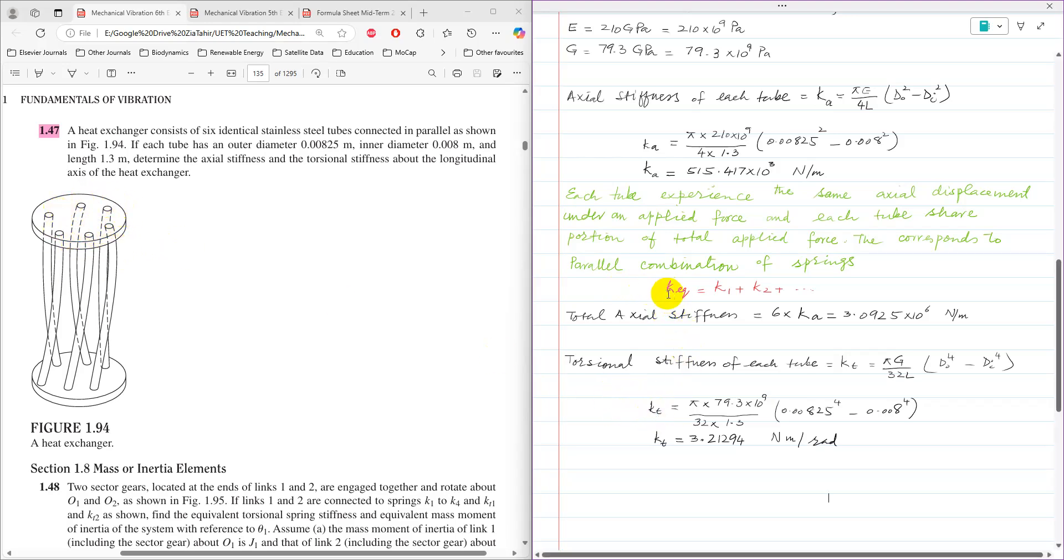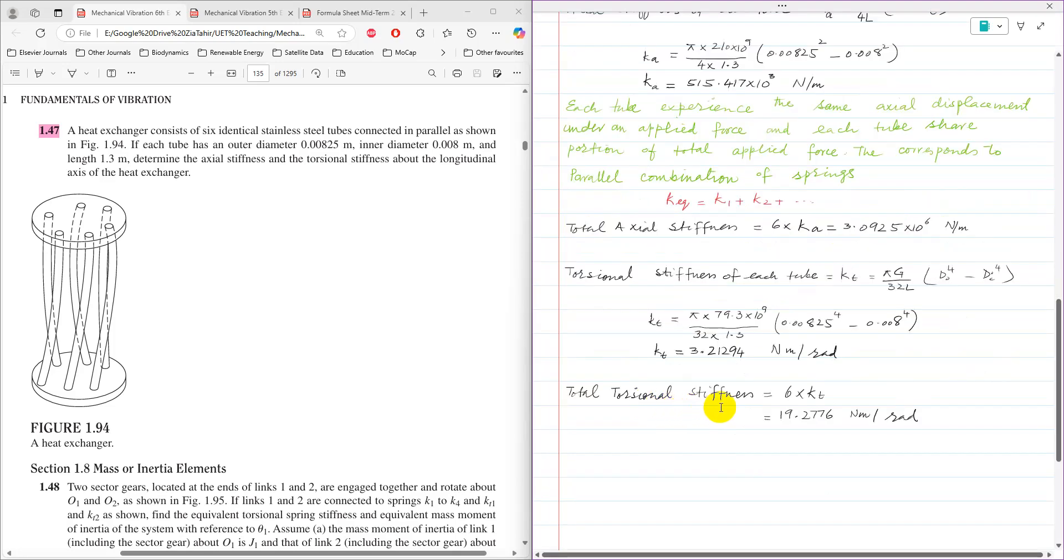Again for torsional stiffness, that corresponds to the parallel combination of torsional spring and similarly K equivalent will be simple addition of stiffness of each tube. Torsional stiffness is 6 times K_T which we have just calculated for each tube, so it comes as 19.2776 Newton meter per radian.